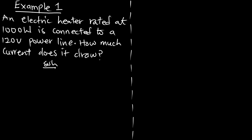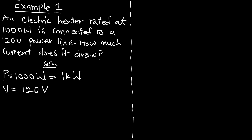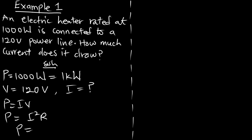We need to find the current drawn by the electric heater. From the question, our power is 1000 watts, which is the same as 1 kilowatt. This is connected to a voltage source of 120 volts, and we have to calculate for the current I. We know all three expressions: P = IV, P = I²R, and P = V²/R.